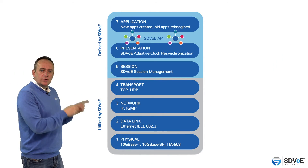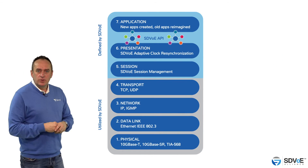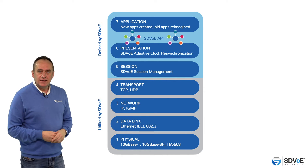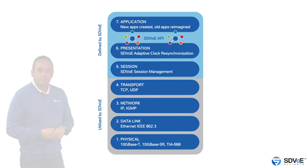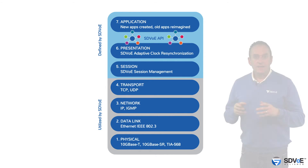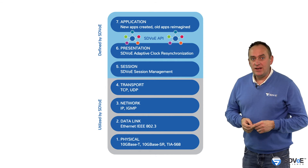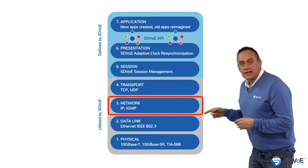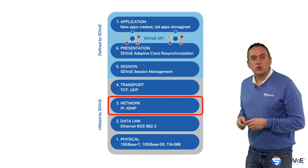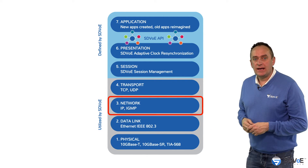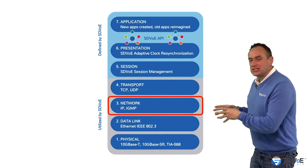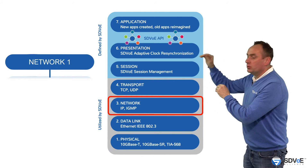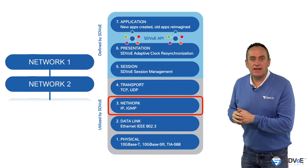Layer 2 of the OSI model is where a network is created. Now let's head up to layer 3. We can clearly see this is called the network layer, and that's because this is the layer which connects multiple networks together.